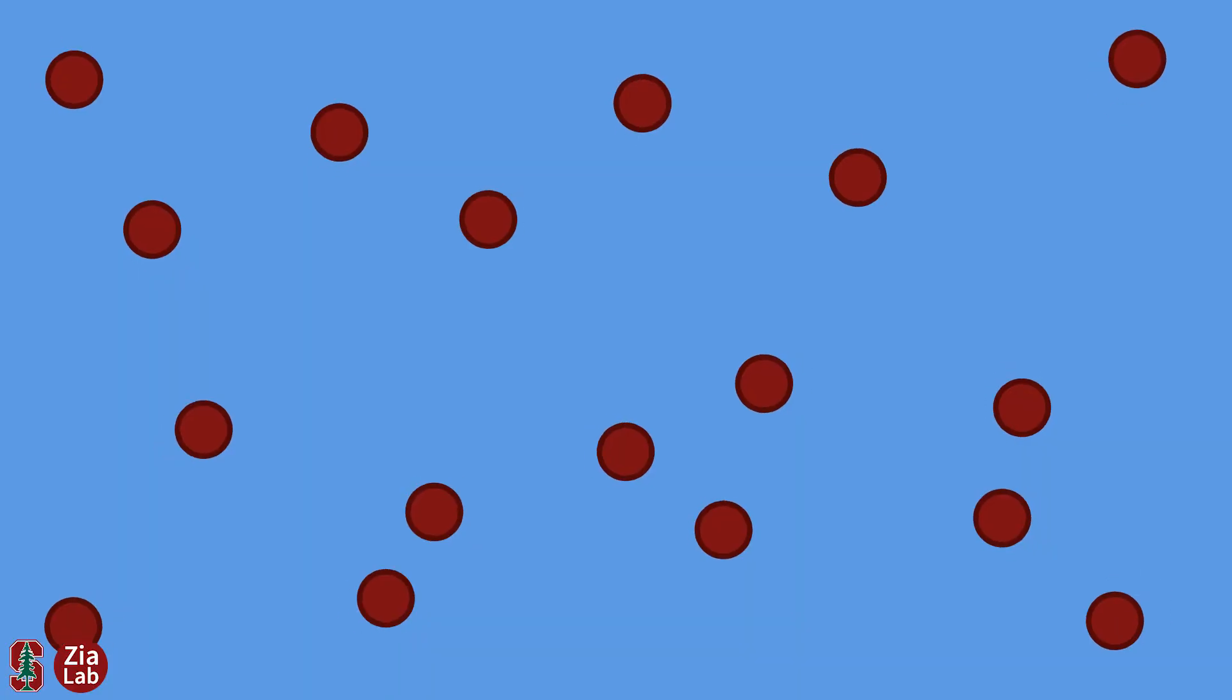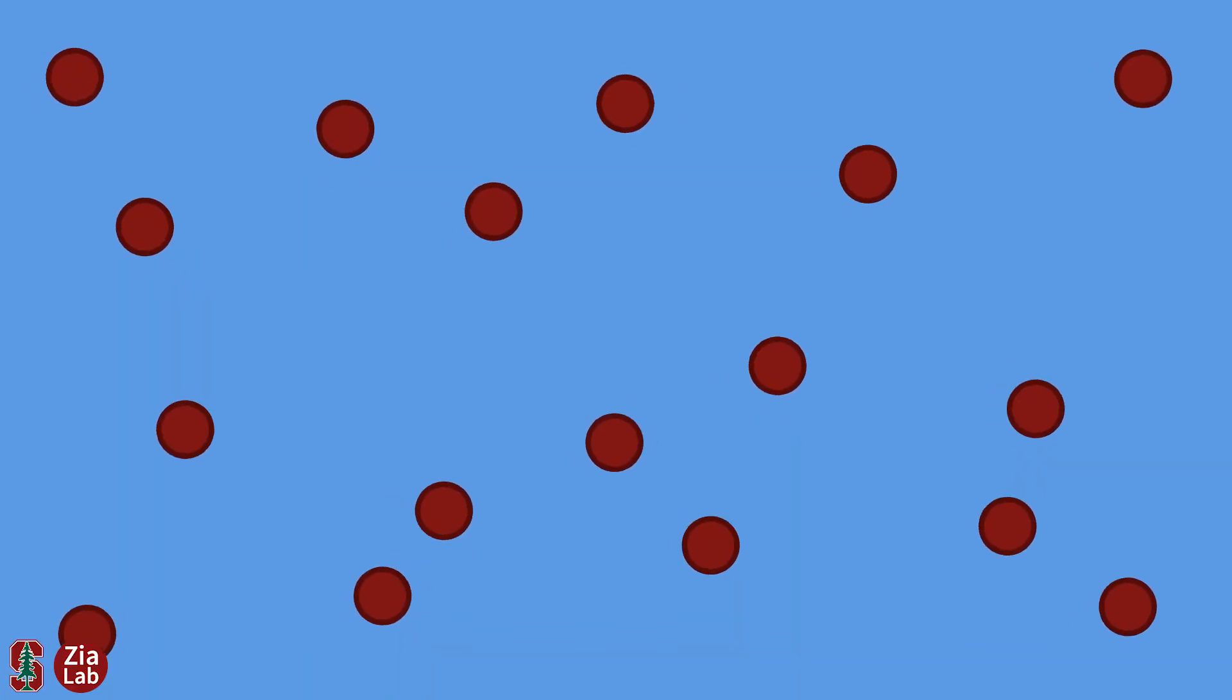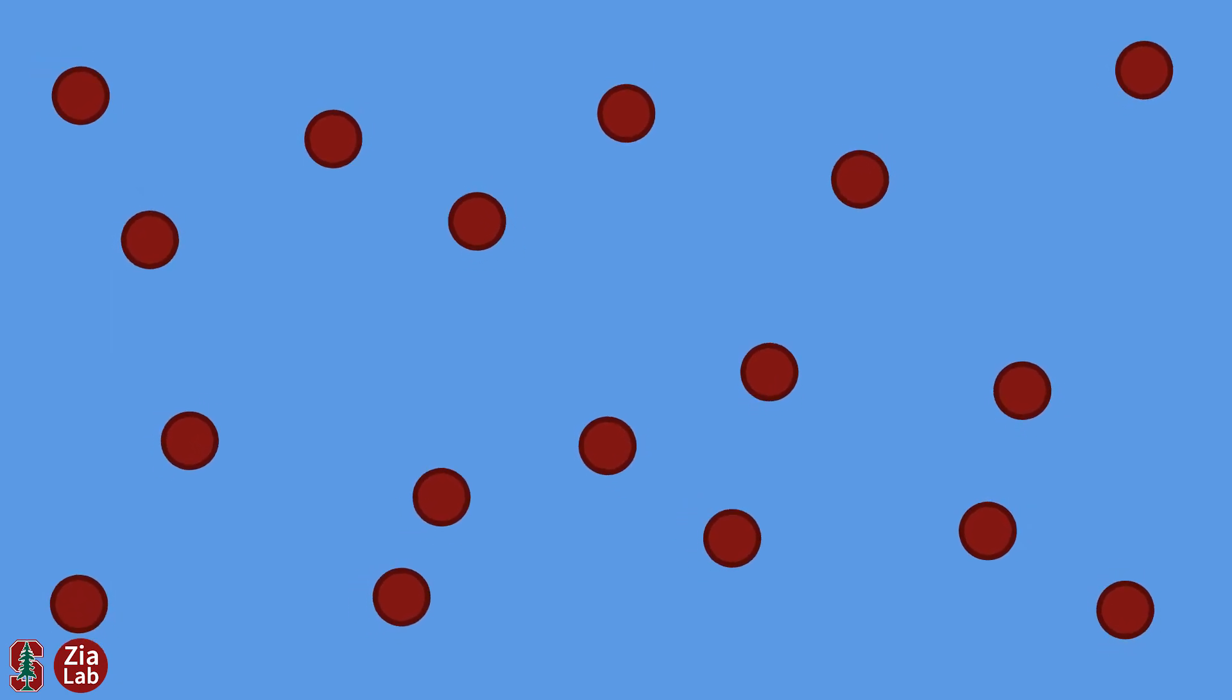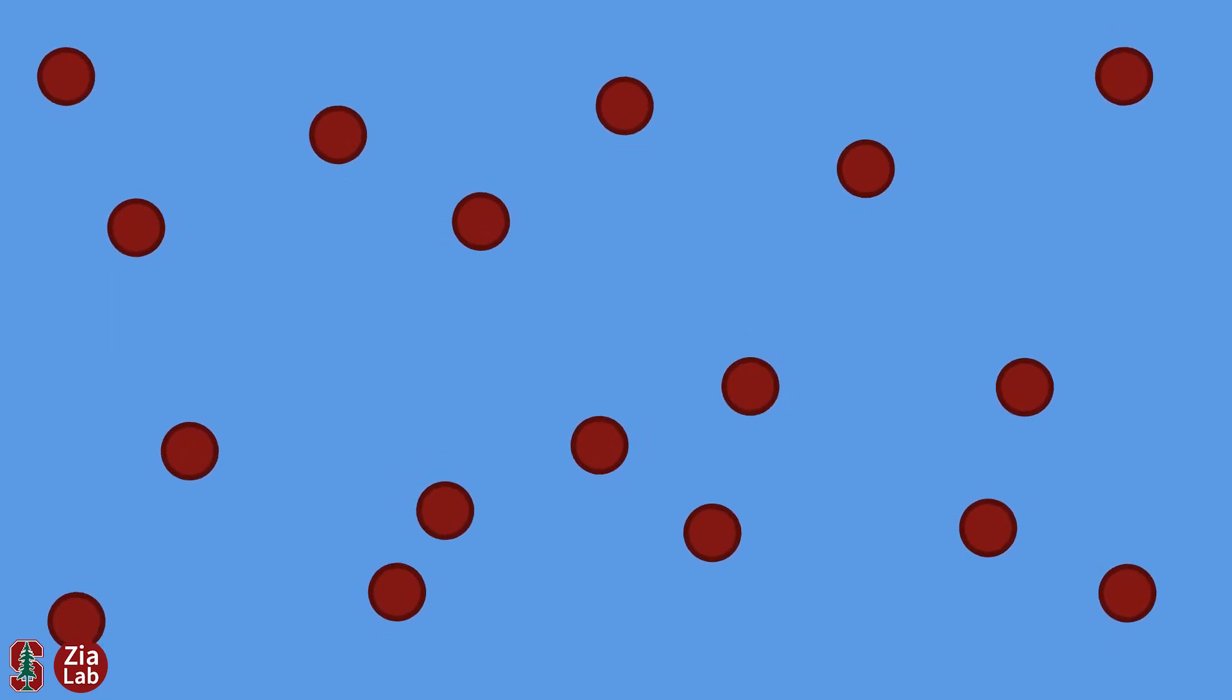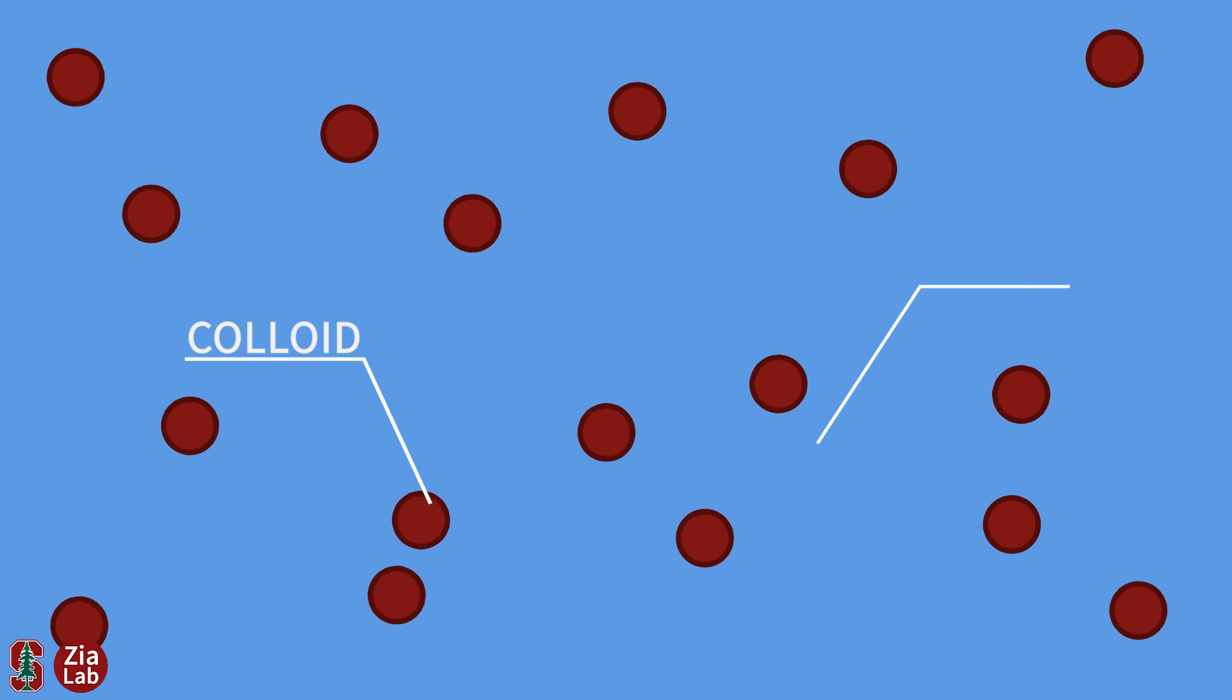Before a gel becomes a gel, it starts out as a complex fluid, a mixture containing microscopic particles, known as colloids, that are suspended in a liquid.